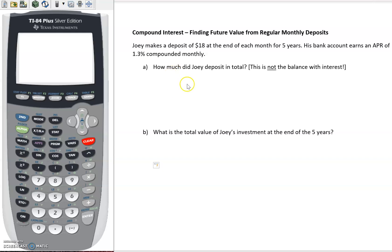The first part is actually less complicated than it might look. How much did Joey deposit in total? So this is basically asking how much came out of Joey's pocket. Well, Joey put in $18 every month. If we have $18 every month, there are 12 months in a year, and he did this over the course of five years.